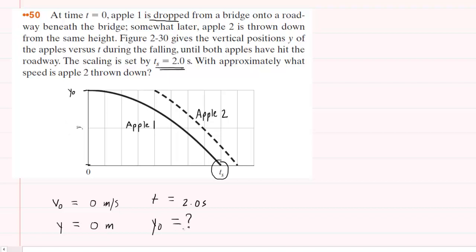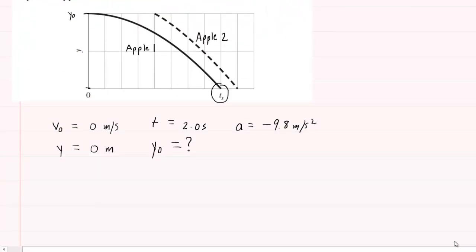Now, Apple I is in free fall, so we also know the acceleration is negative 9.8 meters per second squared. So now we just have to pick one of our equations from kinematics in order to solve for that initial y-coordinate of Apple I, and we're going to end up using this equation right here.